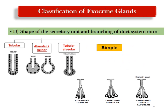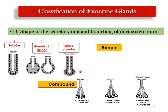Classified by the shape of the secretory unit and duct branching: if the duct system is single and unbranched, it is a simple gland; if branched, a compound gland. The secretory unit may be tubular, alveolar/acinar, or mixed (tubulo-acinar). To name a gland, first identify the duct branching (simple or compound), then the shape of the secretory unit — for example, simple tubular.